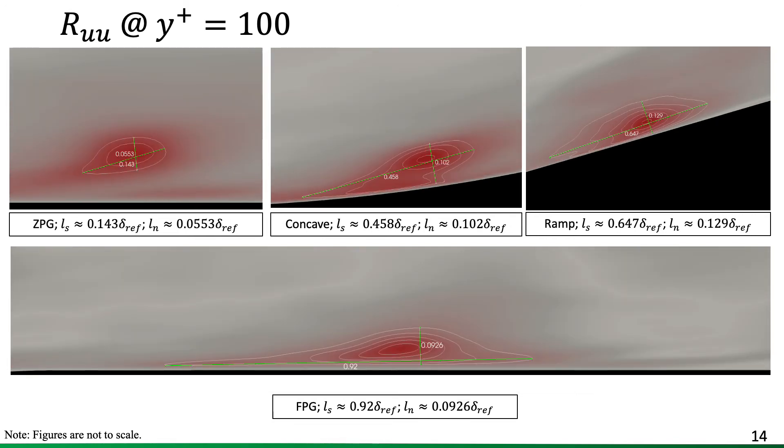In the outer portion of the boundary layer, we see incoming structures are relatively small in terms of their overall footprint. And they again suffer an elongation and thickening by nearly double in the concave portion. And again, they continue to grow as was seen in the log region in the ramp. And again, the behavior, albeit in the outer region, is not as dramatic as was previously seen. The structures are elongated up to their longest point in the FPG region.